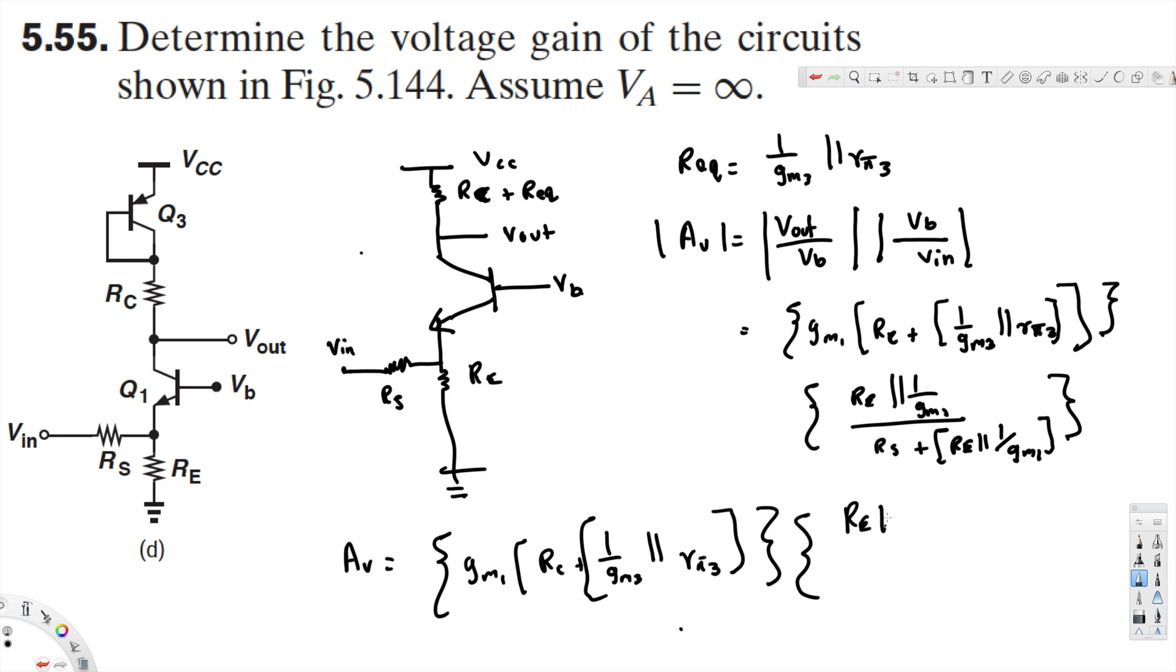RE parallel 1 over GM1, divided by RS plus (RE parallel 1 over GM1). That's our voltage gain, and that's how we solve this kind of problem.